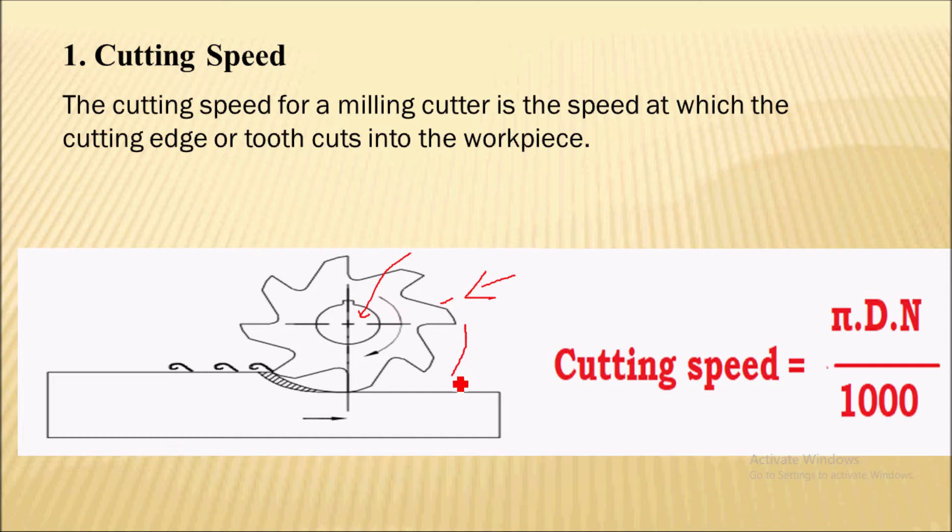This spindle or arbor will rotate this milling cutter, which is fed against the workpiece to remove the material from the workpiece. Now what is the cutting speed for this milling cutter?